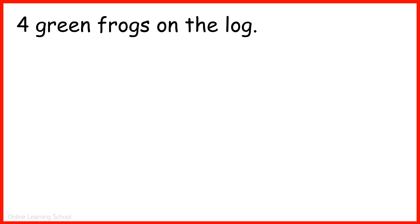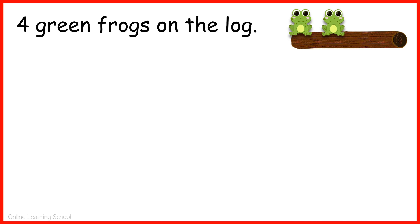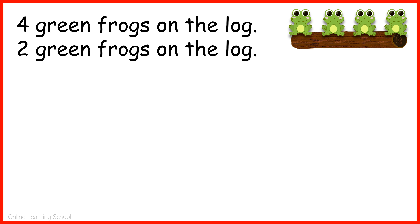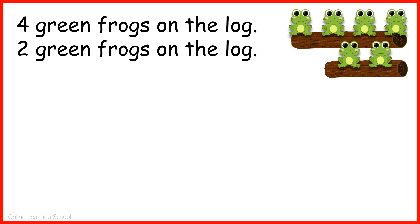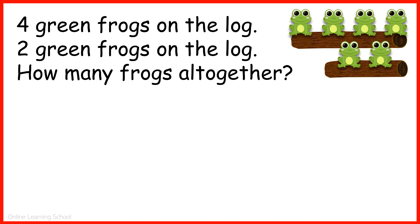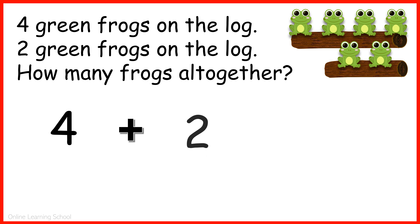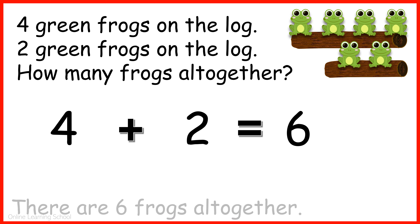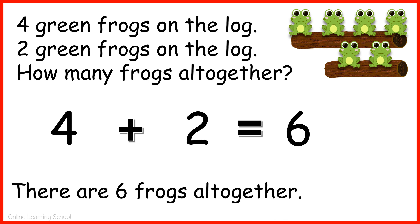Four green frogs on the log: one, two, three, four. Two green frogs on the log: one, two. How many frogs altogether? Four plus two equals six. There are six frogs altogether.